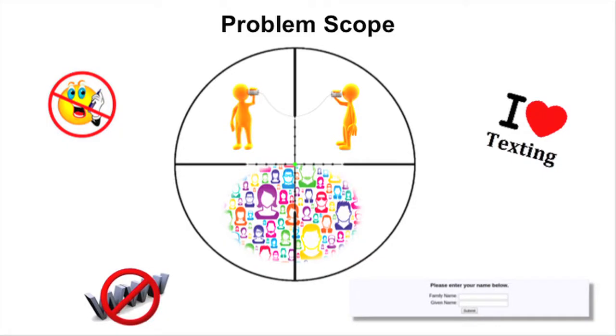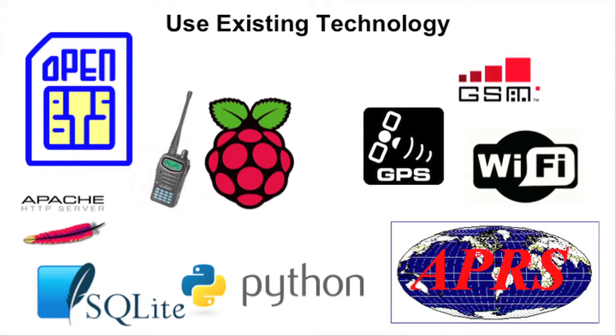To help deal with some of these problems, we're reducing the scope of our project to only providing very basic comms services. We're not going to provide any voice traffic, we're not going to provide any general internet access — we're just going to do very simple things. We're also going to leverage existing technologies whenever possible, such as OpenBTS and APERS, so we don't need to reinvent the wheel.